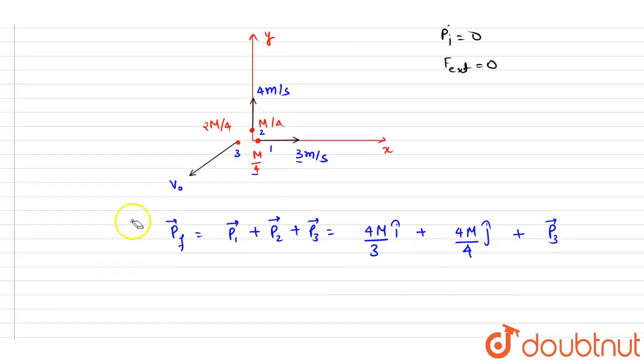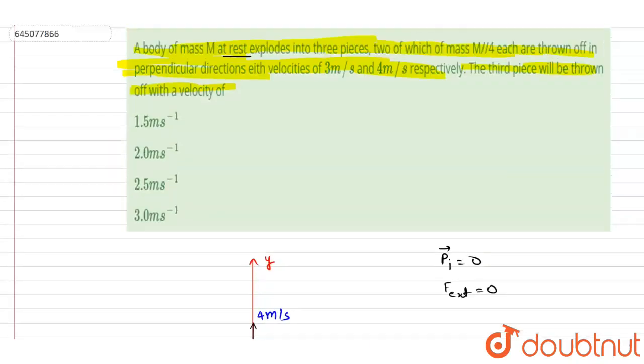Right, so we can write down the p3 as 2m by... if you see this is m by 4 and m by 4, these two are m by 4 and m by 4. The total mass is m, so the p3 will have this mass, that is 2m by 4. So I will write down...